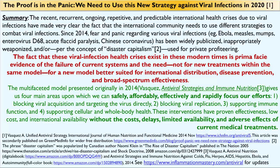The multifaceted model presented originally in my 2014 book, Antiviral Strategies and Immune Nutrition, also published as an e-book titled Antiviral Nutrition, gives us four main areas upon which we can safely, affordably, effectively, and rapidly focus our efforts. Number one, blocking viral acquisition by targeting the virus directly. Number two, blocking viral replication. Number three, supporting immune function. And number four, supporting cellular and whole body health. These interventions have proven effectiveness, low cost, and international availability, without the costs, delays, limited availability, and adverse effects of current and forecasted medical treatments.